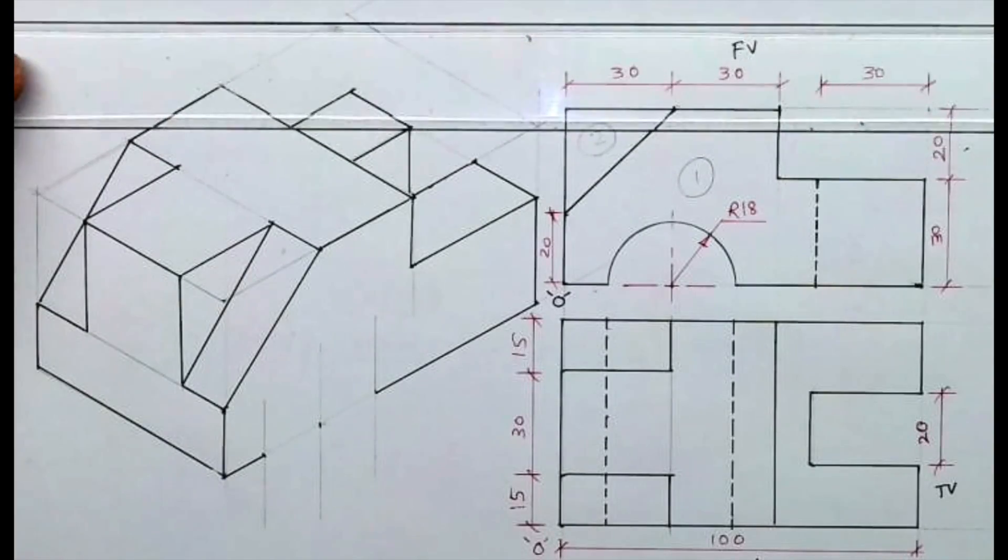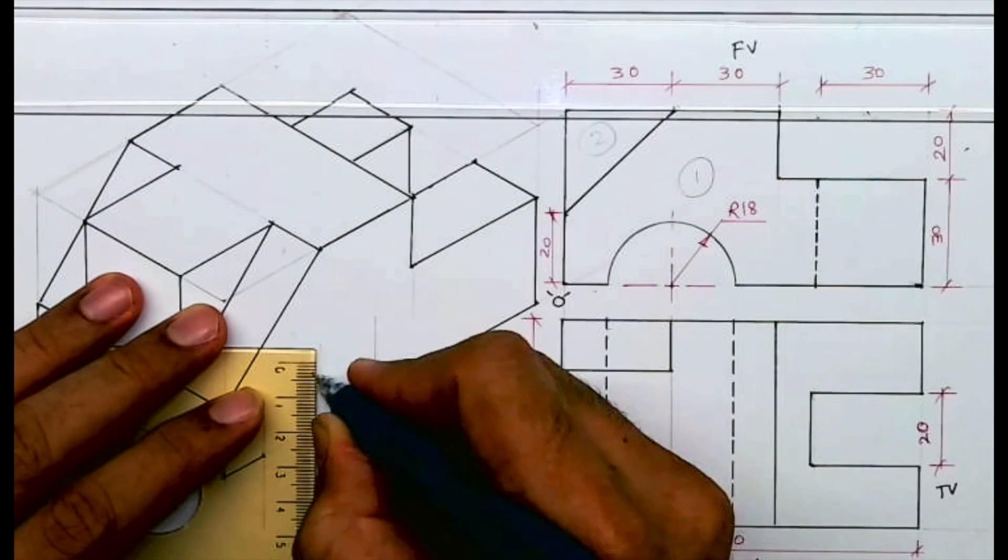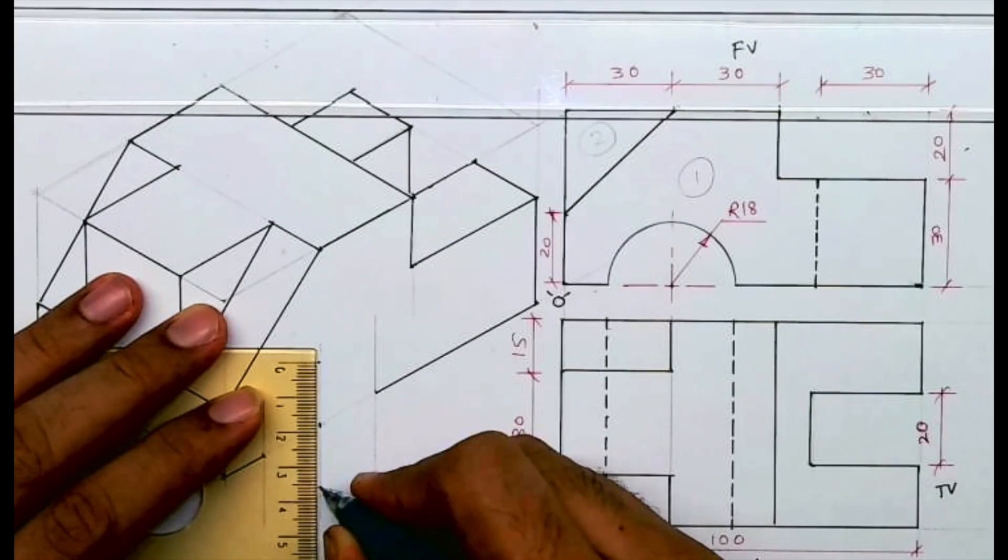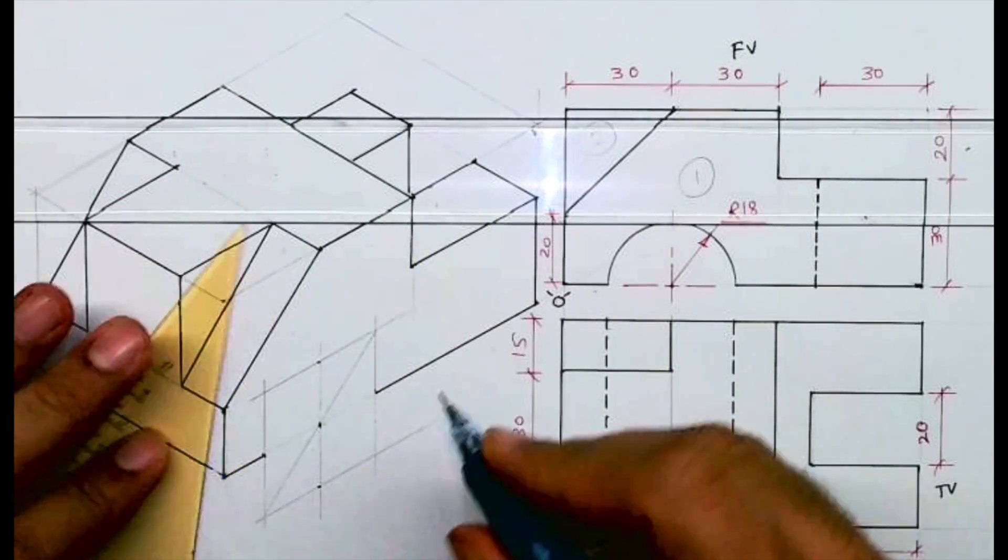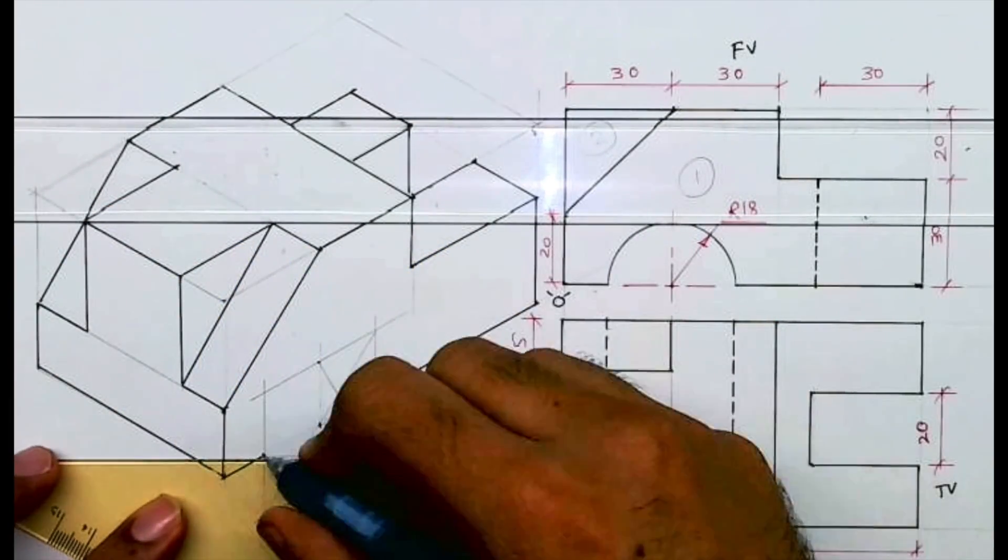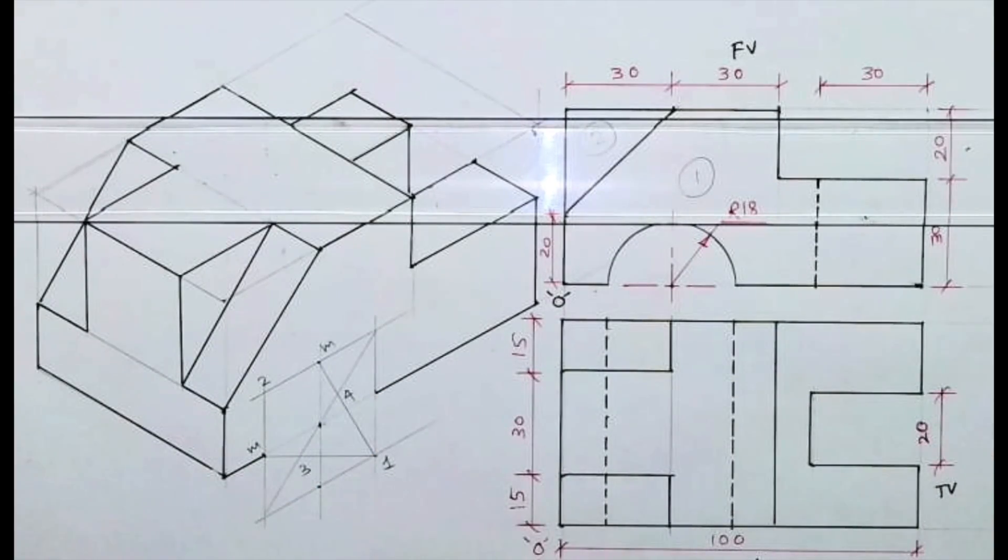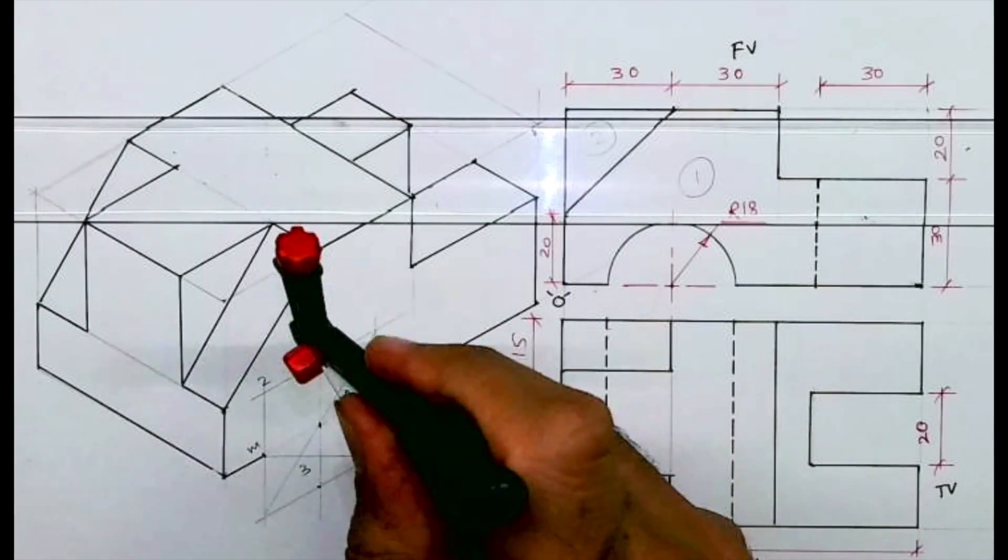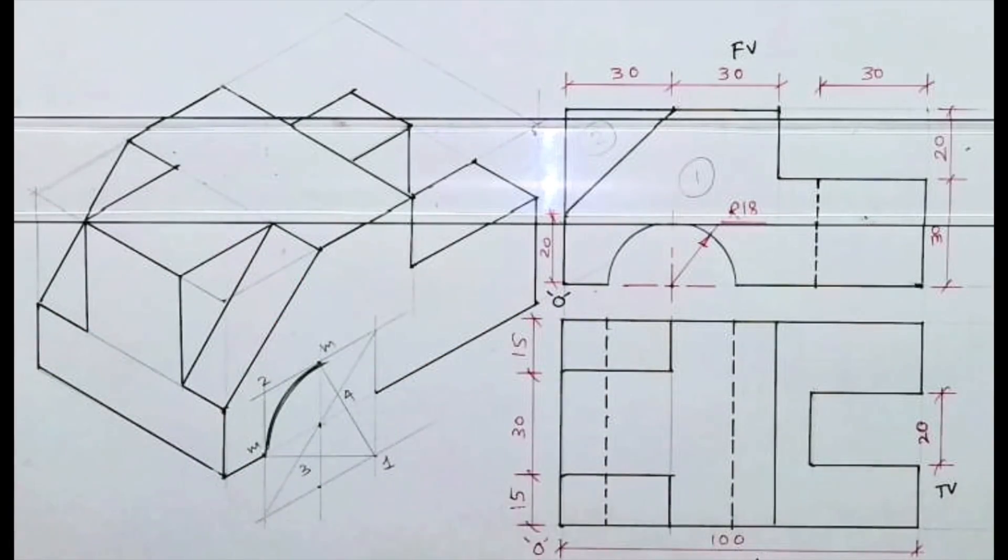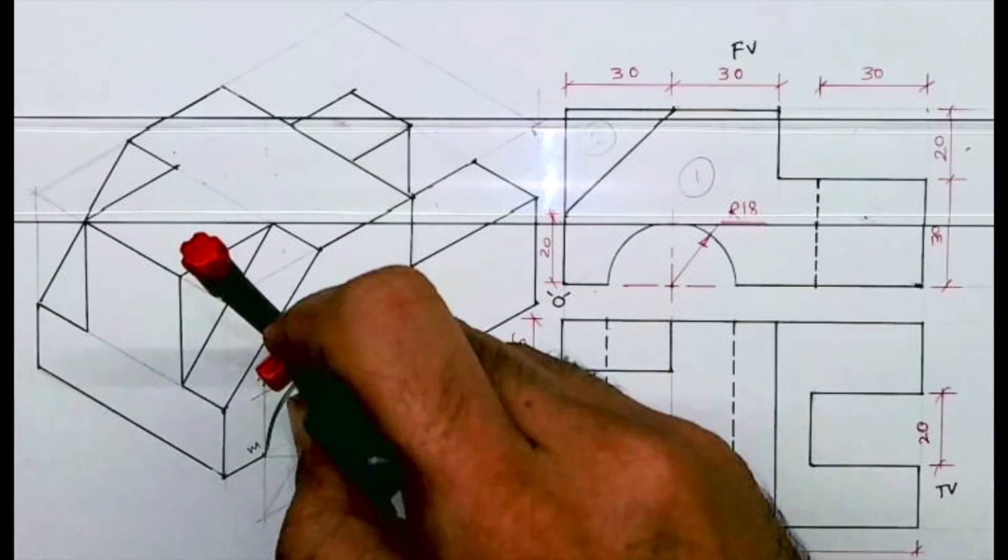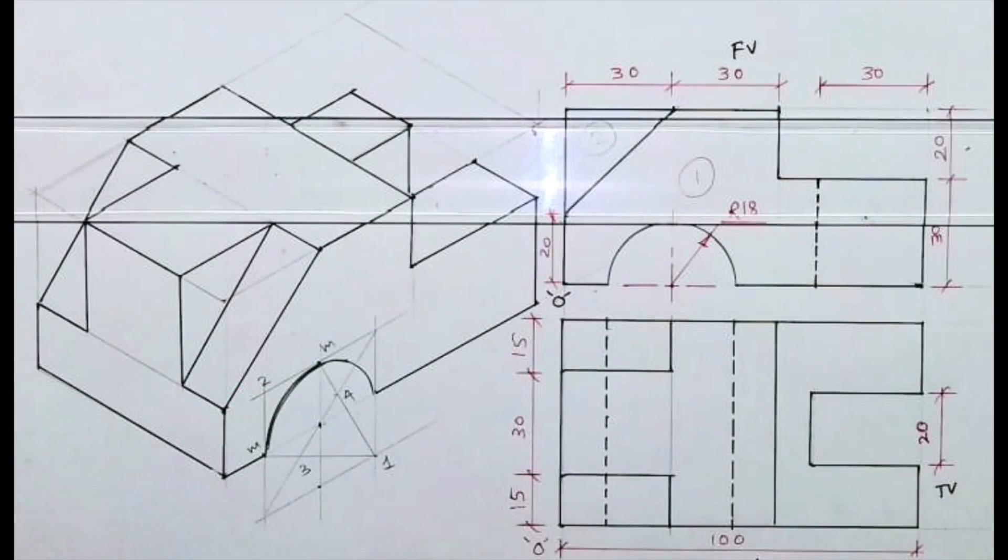Now we need to draw a circle. So for that circle, from center O we'll take 18 up, 18 down, and we'll draw parallel lines. With the four center method we'll draw the circle. This is one, two, three, four - M. So what we will do, we'll take one to M and draw an arc. Then we'll take four to M and draw an arc. So by doing this, we are done with the semicircle part.